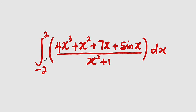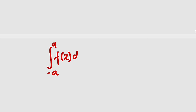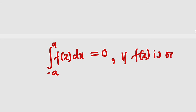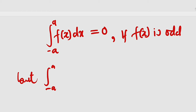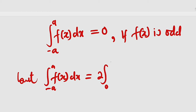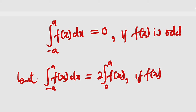This is a symmetrical interval. Remember: if you have the integral from negative a to a of a function f(x) with respect to x, this is always equal to 0 if that function is odd. But the integral from negative a to a of f(x) can be written as 2 multiplied by the integral from 0 to a of f(x) if the function f(x) is even.